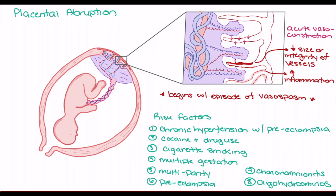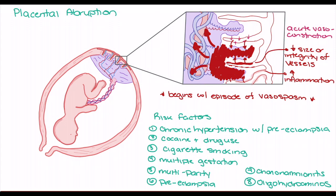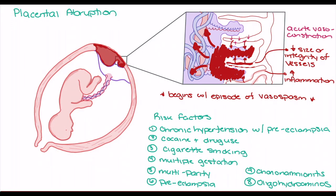Overall, the risk involved in these factors is that the maternal circulation found in the decidua basalis will rupture, leading to accumulation of blood. As blood accumulates, we see an increase in pressure, which leads to ripping and tearing forces that destroy the decidua basalis while pushing the placenta away from the maternal tissues. This can be visualized as the bleeding increases within the decidua basalis, actually pushing the placenta away from the uterine wall.